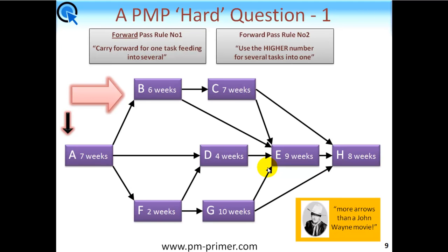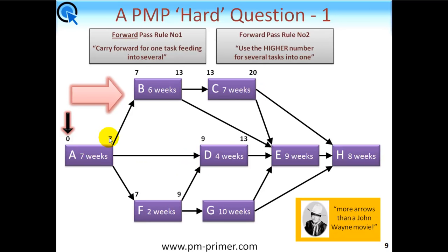Let's go through this exactly as you'd do under exam conditions. Take the first task, put a zero there and add the duration, giving seven. This obviously feeds into three tasks. I notice one of them has two arrows going into it, so I'll leave that for the moment and do the easy ones first. We take this seven — one task feeding into several — so seven goes straight up here, add the duration, making 13. Seven also goes down here, add the duration, making nine. Simply one task after another with one arrow in: carry 13 across, add the duration, giving 20. In the middle, two arrows come in showing seven and nine — use the highest number, so nine comes here. Nine plus four gives 13. Down here it's only one input, so carry nine across, add the duration, giving 19.